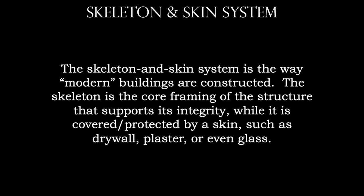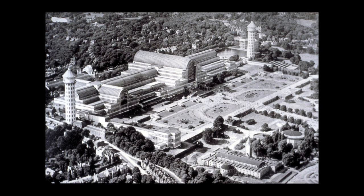The very first modern building we're going to look at is the Crystal Palace, created by Joseph Paxton. It was in London, and it housed the very first World's Fair in 1851. This is a gigantic structure — it covers 18 acres worth of property. You can see that it's mostly all glass.